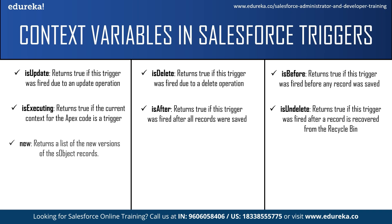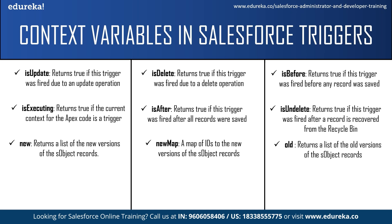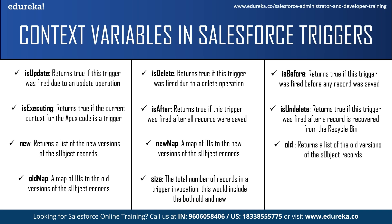Next we have the new context variable — this returns a list of new versions of the Salesforce object records. It is only available in insert, update, and undelete triggers, and records can only be modified in before triggers. After that we have newMap — a map of IDs to the new version of the Salesforce object records, available in before update, after insert, after update, and after undelete triggers. Then we have old — which returns a list of old versions of the Salesforce object records, available in update and delete triggers. Next is oldMap — a map of IDs to old versions, also available in update and delete triggers. Finally, size returns the total number of records in a trigger invocation, including both old and new.